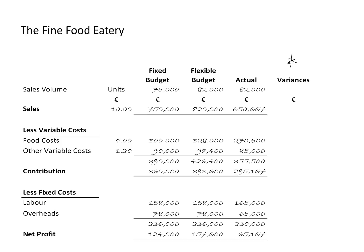In calculating my variances, I'm going to first calculate a sales price variance, then the cost variances, and finally the volume variance. With the sales price variance, I'm going to compare these two numbers here. I'd recommend you find the difference — forget about whether it's plus or minus — and the difference works out at €169,333. Then we label it with either A if it's adverse, meaning detrimental to profits, or F if it's favourable, meaning beneficial for profits. We would expect revenue should have been €820,000; it was in fact way lower, so we're worse off — that is an adverse variance. That's the sales price variance.